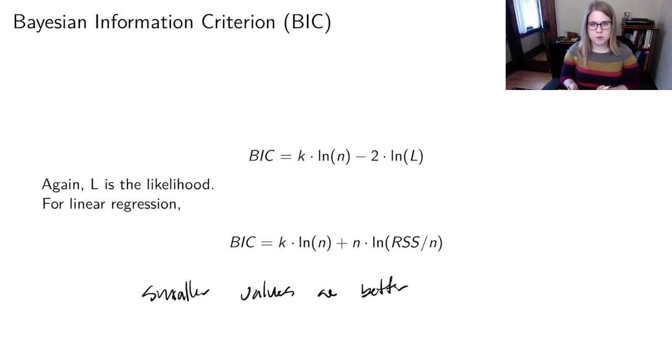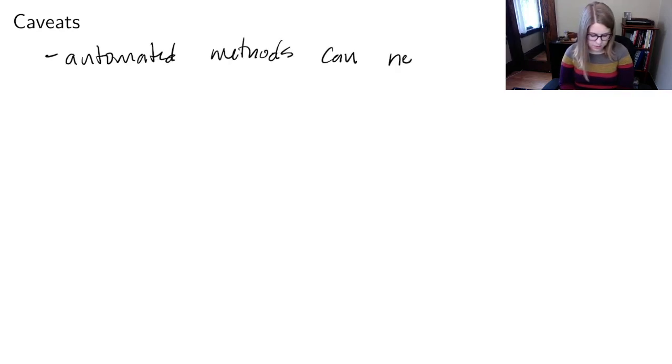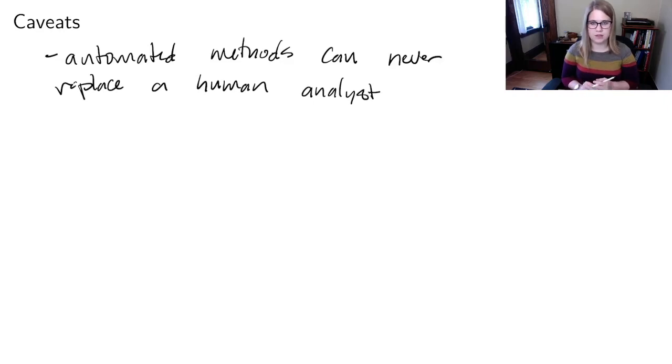So I've just told you about a bunch of different methods for variable selection, and then a bunch of different statistics that you could use to compare models. So the main caveat that I want to give you is that an automated method can never replace a human analyst. So oftentimes, once I show students these methods, they feel like they have to use them and the solution that comes out of R is the best model. But that's not necessarily the case.